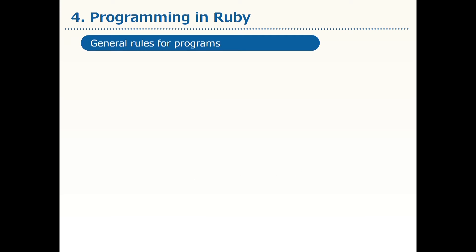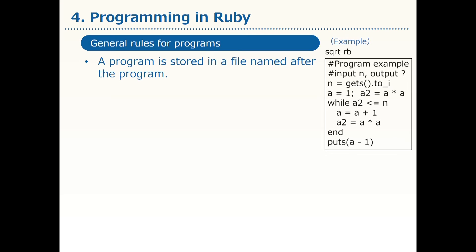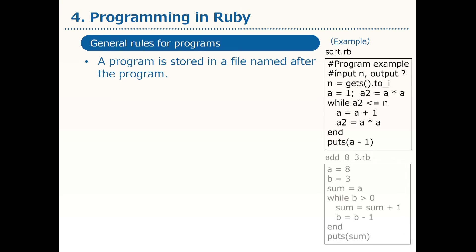There are various programming languages. Let us see the general rules common to various programming languages. First, a program is stored in a file named after the program. For example, this is one program, and it is stored in a file named sqrt.rb. This is another program, and it is housed in a file named add-8-3.rb.